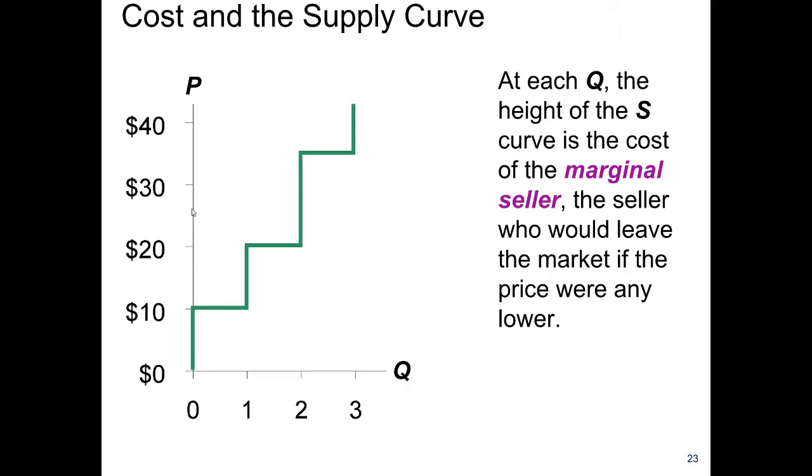If the price is $25, then two people are happy to cut the lawn, and so on. So we can read the supply curve horizontally.